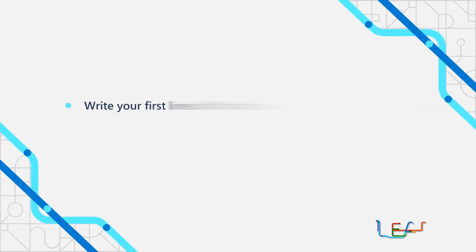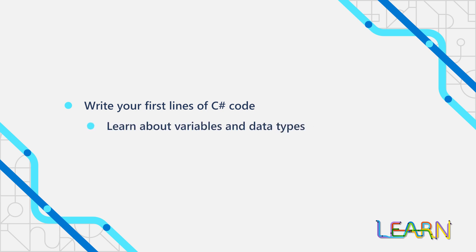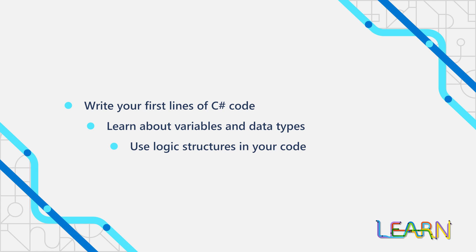From writing your very first lines of C-sharp code to simply print out a message to screen, to learning about variables and basic data types, to basic logic structures like branching and loops. Once you complete this first learning path, you'll have a strong foundation to build on from there.